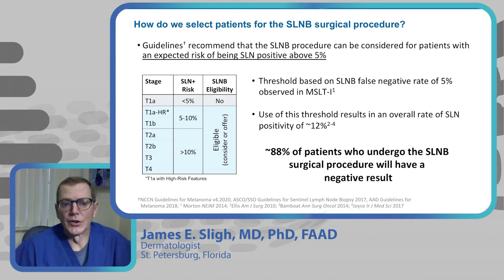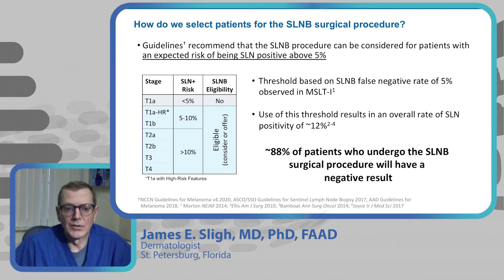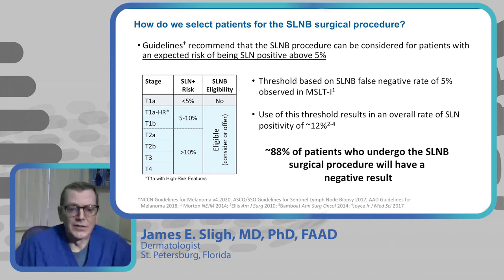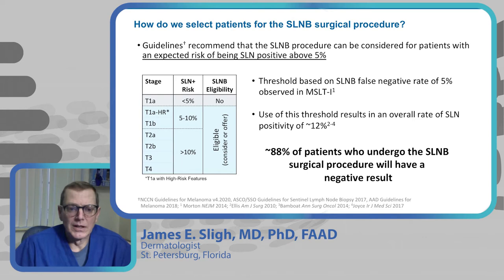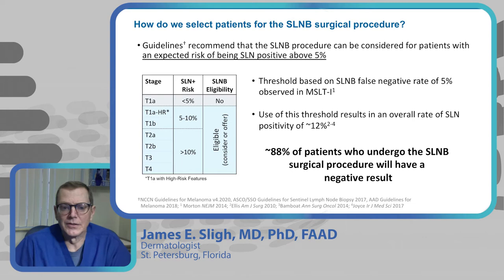Sentinel lymph node biopsy positivity exceeds 5% starting with T1B tumors — thin tumors with ulceration or T1As with high-risk features. Once above one millimeter depth (T2A and higher), yield goes above 5%. At 10% positivity for T2As, those patients should be strongly considered. However, 88% of patients who undergo the procedure ultimately come back with a negative result.